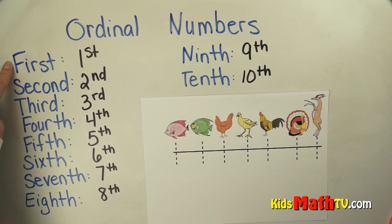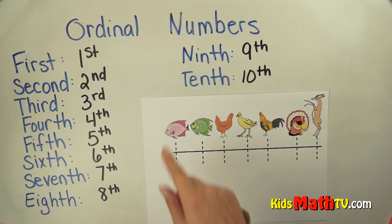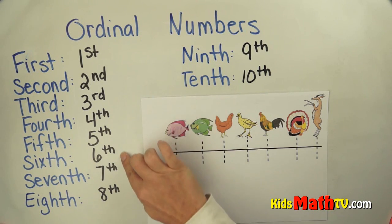We start off with the 1st, then 2nd, 3rd, 4th, 5th, 6th, 7th, 8th, 9th, and 10th. So most numbers end with the th.